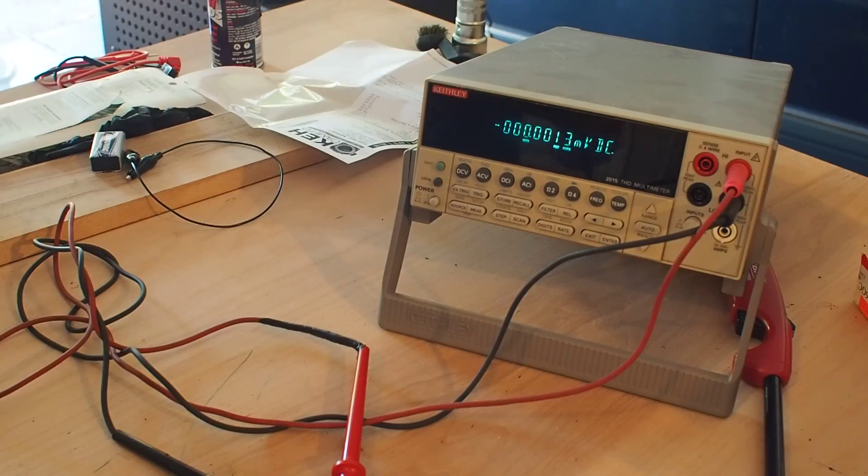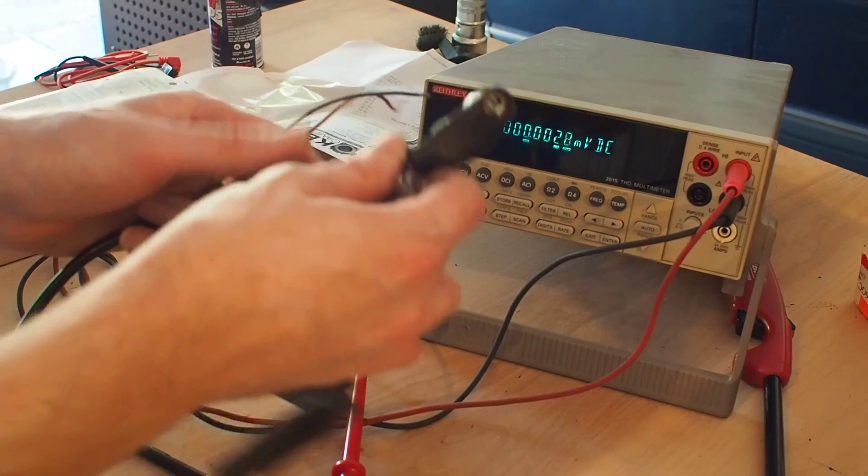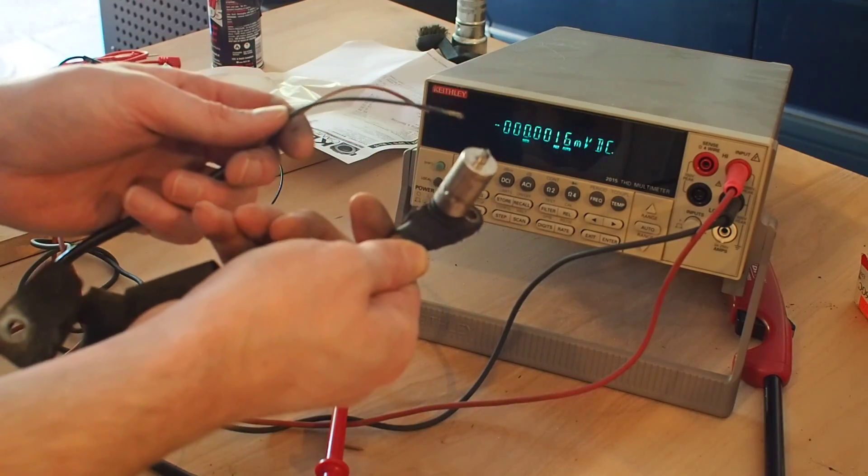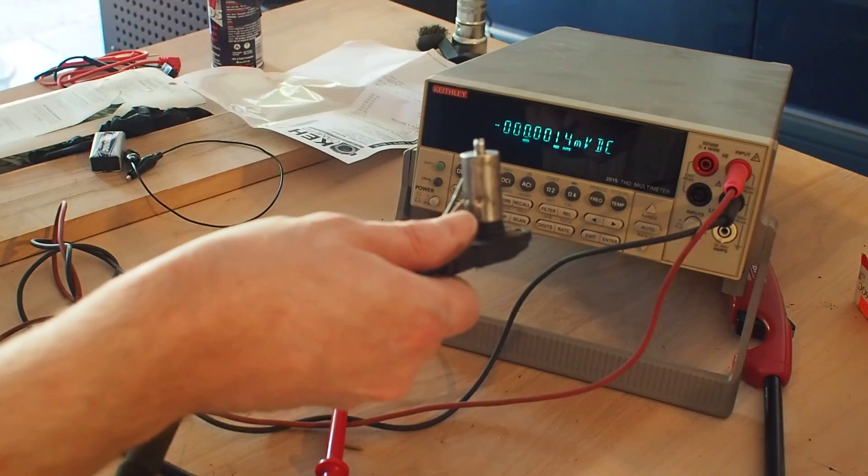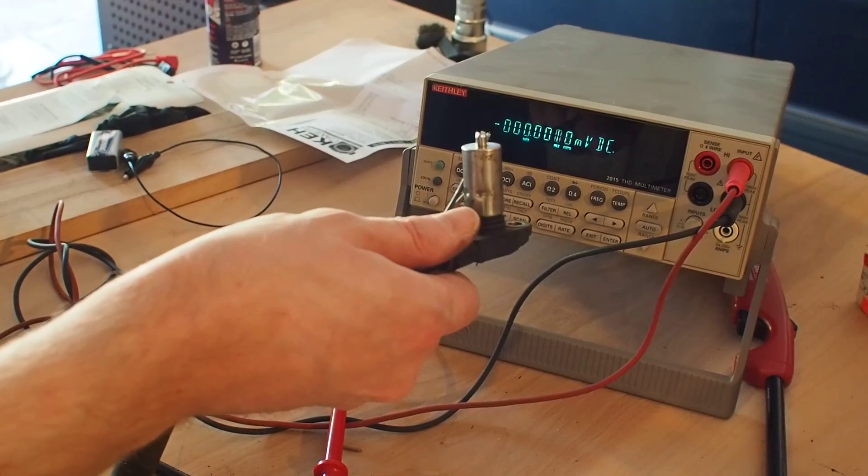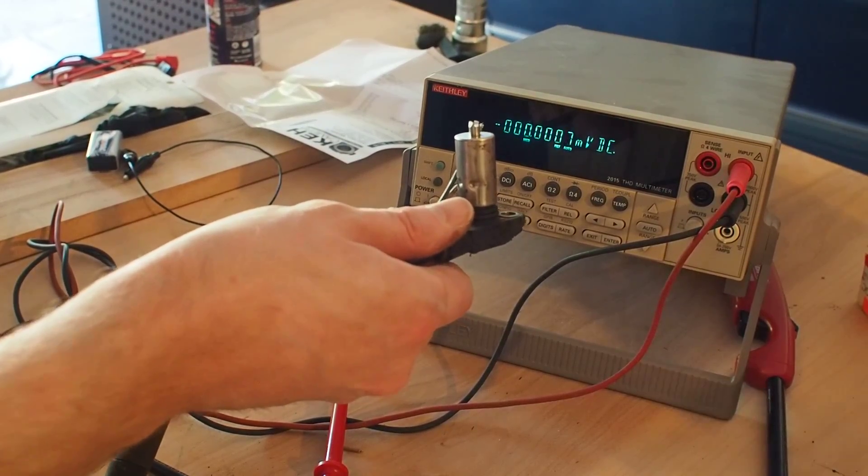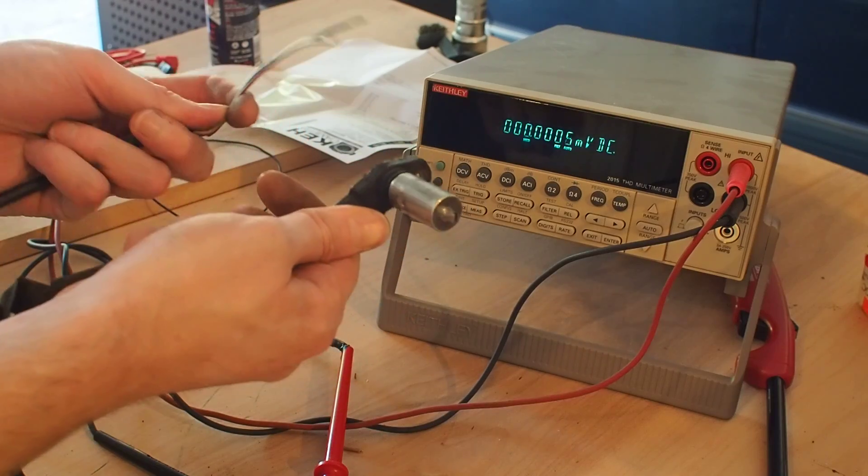Okay, so we have an ABS sensor from a Mercedes 126 vehicle, like a 300 SE, 560 SEL.